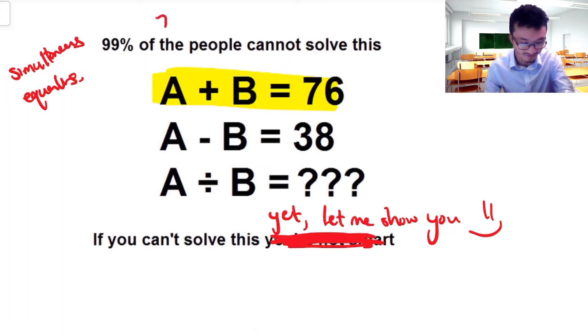For example, I can say that A is 76 and B is 0. That would work for the first one. Or I could change that slightly. I can adjust them each by 1. I can go 75 and 1. 75 plus 1, that gives me 76.